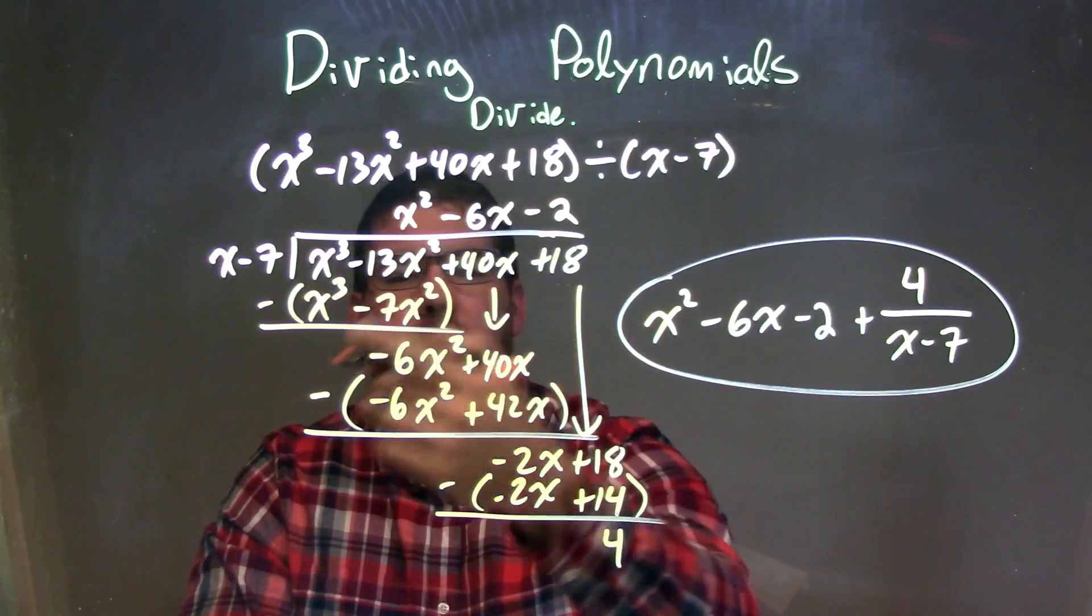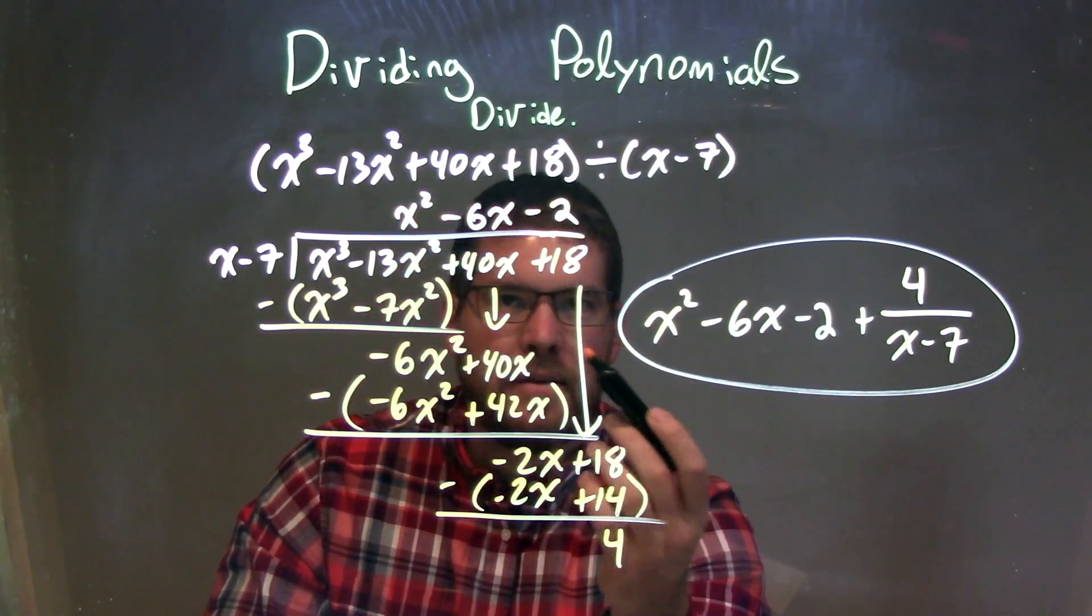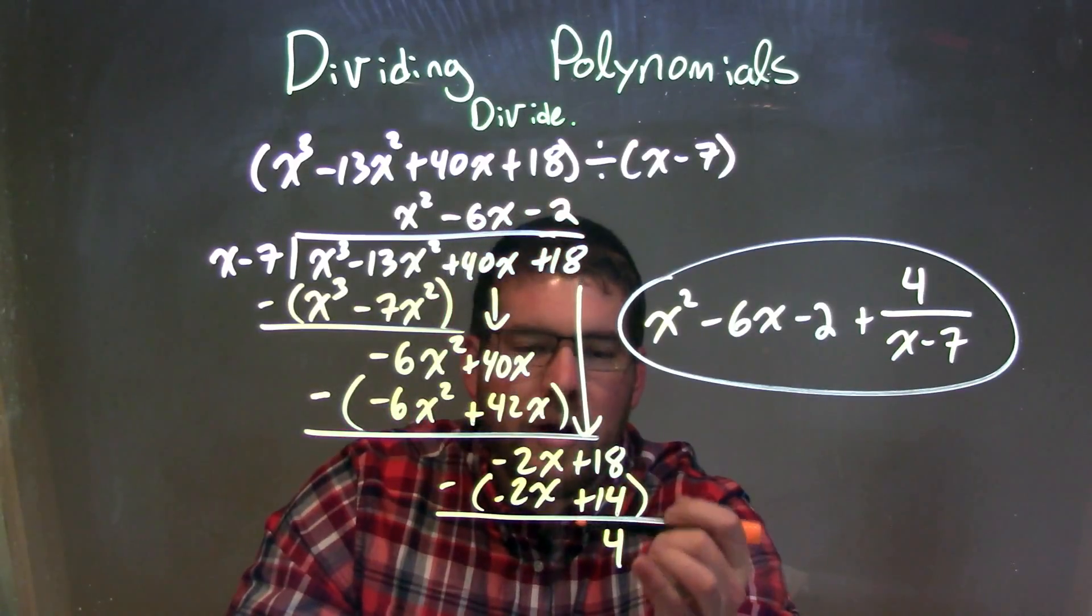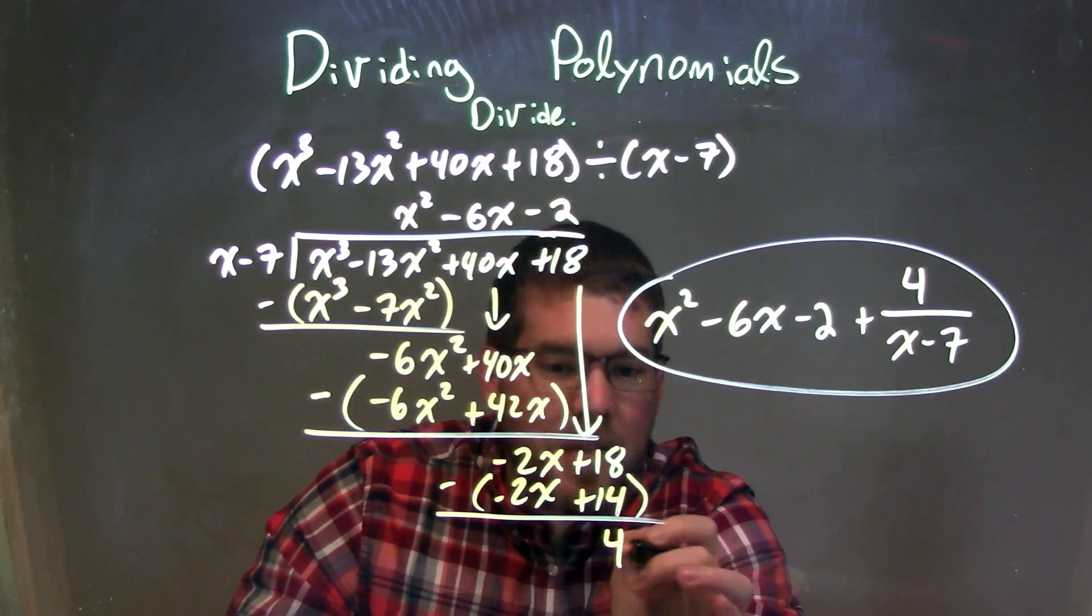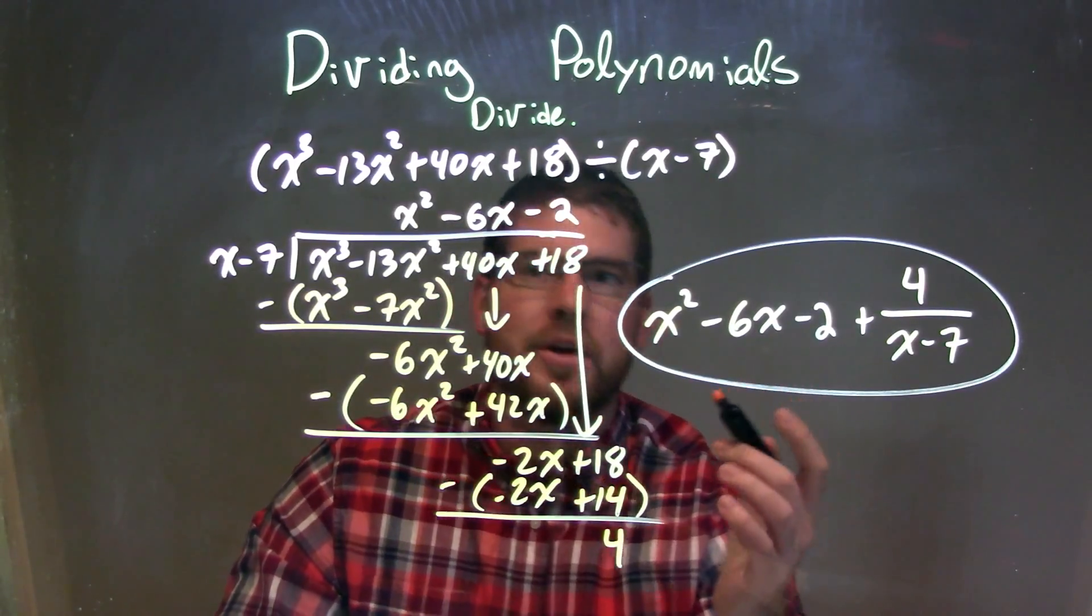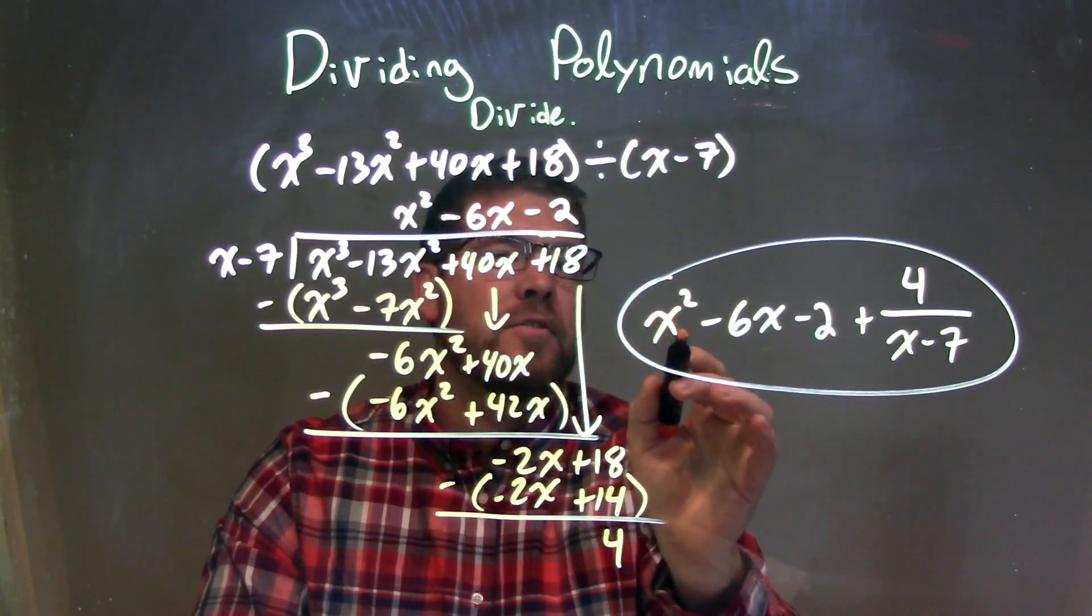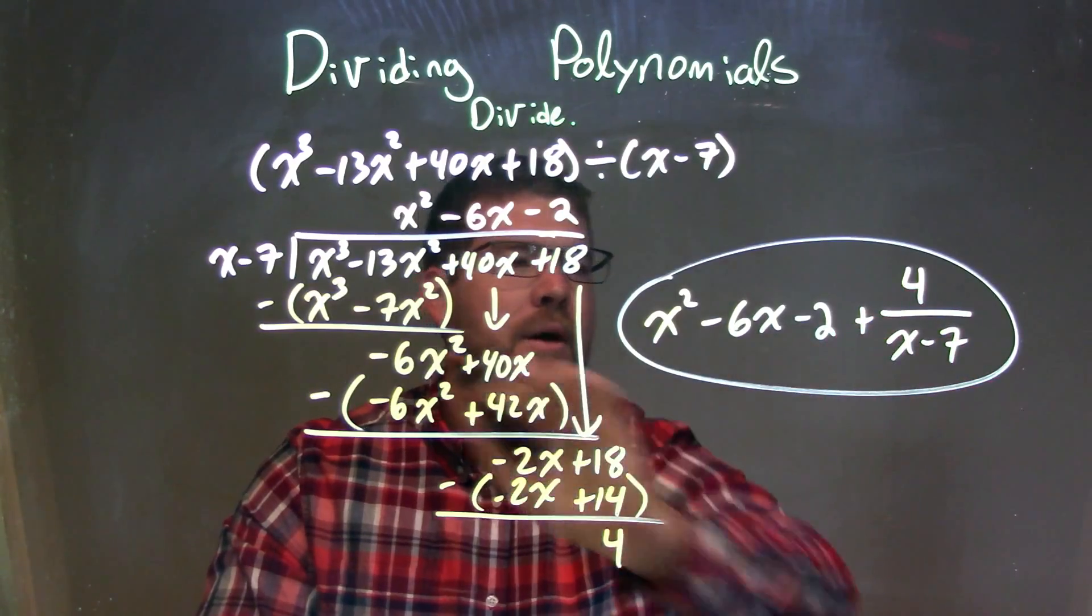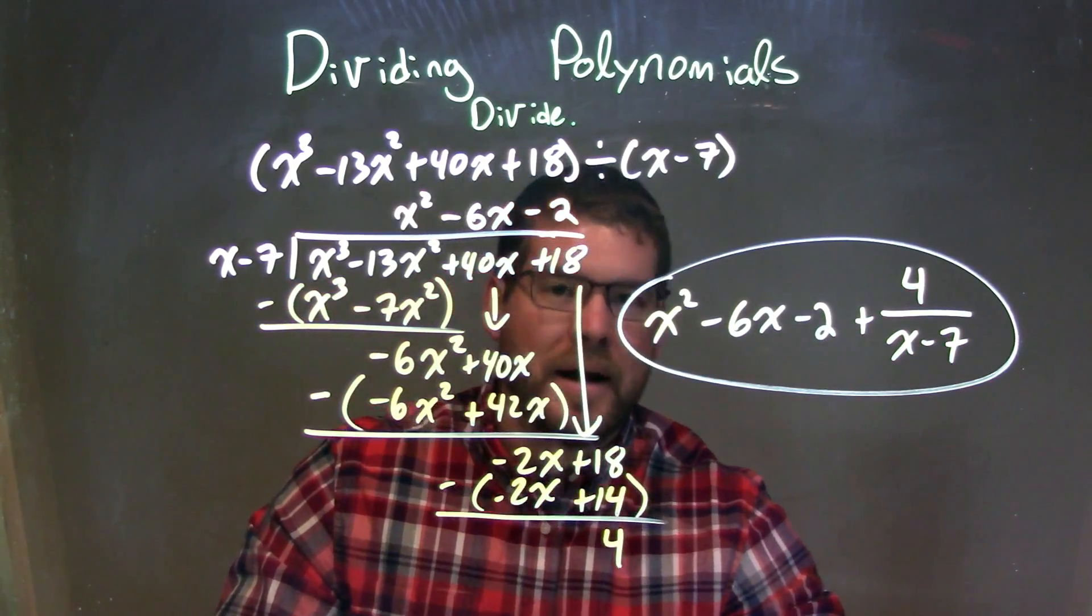Same question again. What times x gives me a minus 2x? That's a minus 2. Multiply it into both parts there, subtracted them, got a positive 4. And at this point now we're done. That's my remainder - that 4 is my remainder. So my final answer here is just what's written up top there: my x squared minus 6x minus 2, plus my remainder, which is 4, divided by my divisor, which is x minus 7.